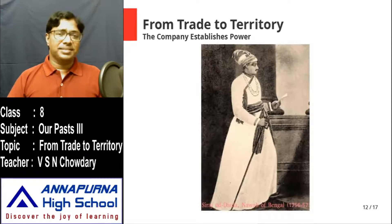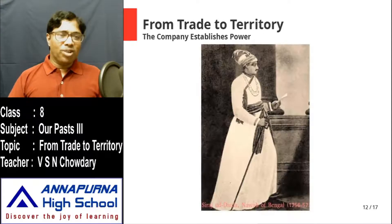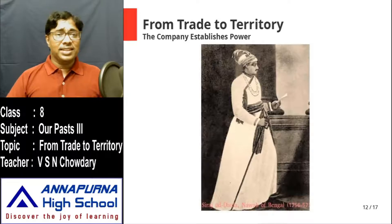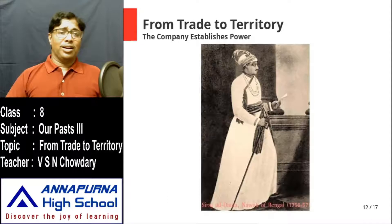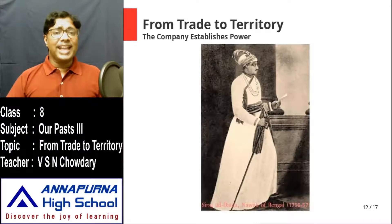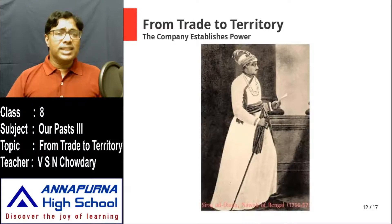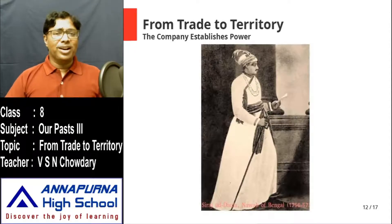By the time Siraj ud-Daulah became Nawab of Bengal, the conflict between the East India Company and the Nawabs had reached its peak. Earlier it was a small company — nobody bothered — but gradually they became powerful: they built a factory, then a fort, then acquired Jamindari rights over three villages, then obtained a Furman from the Mughal Emperor to trade without paying taxes. The Nawabs of Bengal were most affected because they were not getting any revenue from the East India Company, who were misusing the Furman.